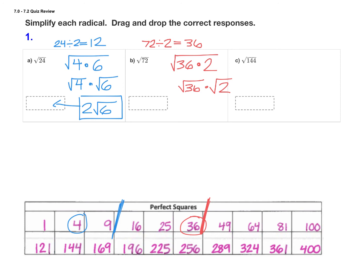Then we can split that apart into two separate radicals: root 36 times root 2. Root 36 is my perfect square, so we have 6 root 2 as our final answer, and again drag and drop that into the box for problem b.